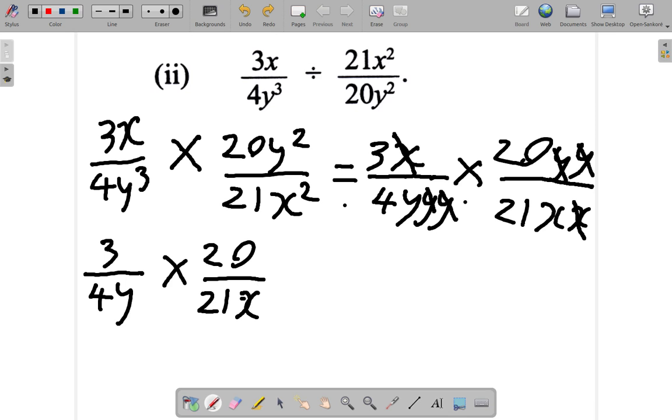But we can still continue to cancel. So let's look at what you have to do. We'll say 3 into 3 goes one time. How many 3's do you have into 21? 7. 4 into 4 goes one time. 4 into 20 is 5. So we're simplifying.